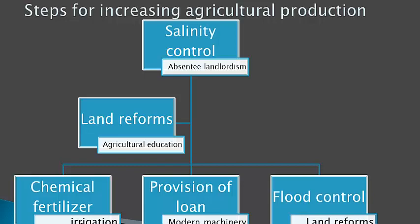Regarding provision of loans — since our farmers are poor, they cannot afford chemical fertilizers or good seeds. Therefore, the government should give them soft loans with low interest rates and easy repayment methods, so they can cover their expenses through these loans, crops can grow, and production will increase, thereby improving the economy and boosting exports.